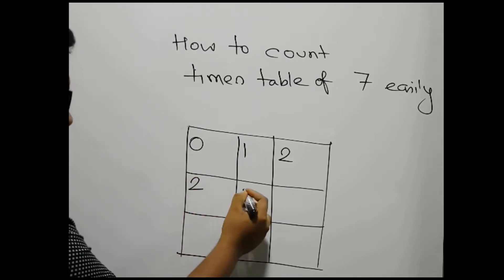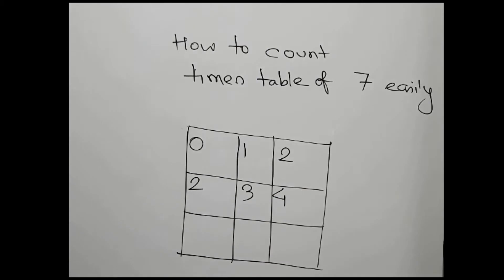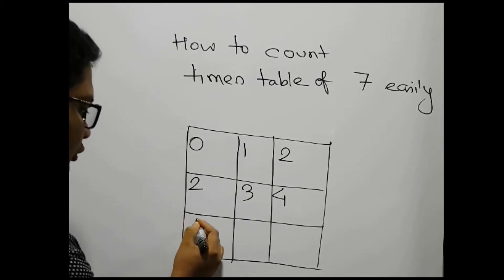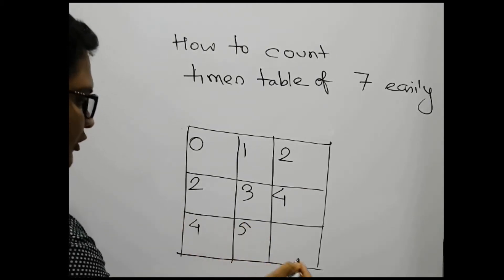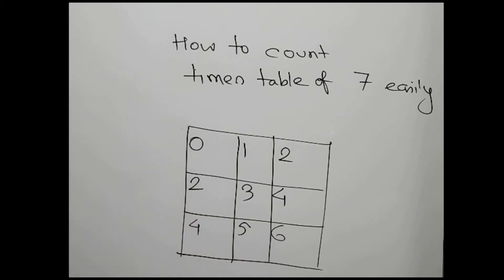So it would be 2, 3, 4. Then we start from 4, 5, and 6. This is the first step.